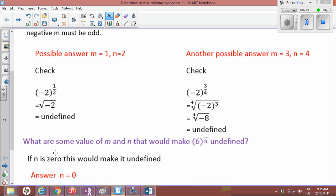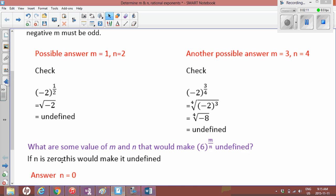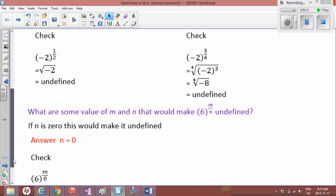So another question we're going to answer: what are some values of m and n that would make 6 to the m over n undefined? In this case, this number is positive. So what we're going to use for this answer is we're going to make the denominator of this fraction 0.